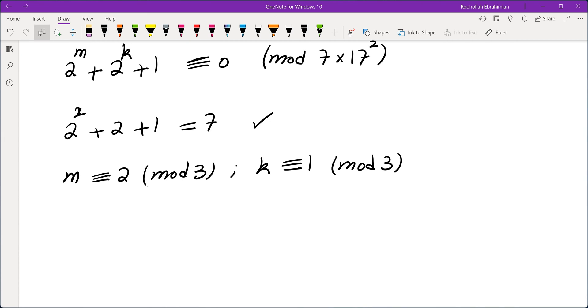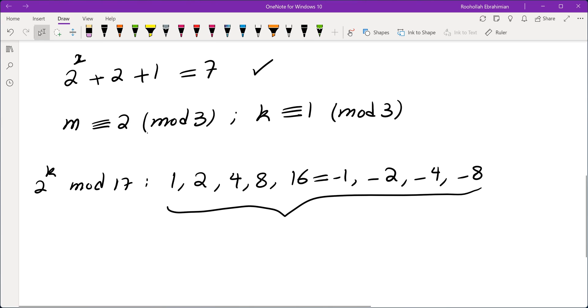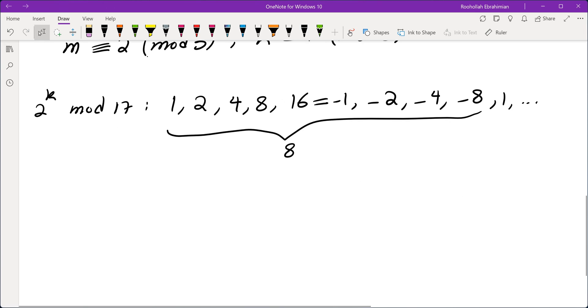Now for multiple of 17 squared, writing down powers of 2 mod 17 squared doesn't seem very wise during the competition, which is why I started writing down powers of 2 mod 17 first. So let's write down these mod 17 and see what we get. So 2 to the power of 0 is 1, 2, 2 squared, 2 cubed. Next one is 16, which is negative 1 mod 17. Next one is negative 2, negative 4 and negative 8. And we see that the length of this is exactly 8. And then of course it repeats.